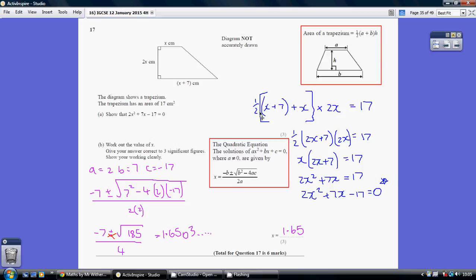We've basically constructed our own equation, which we need to solve. Start off by adding up inside the square brackets. x plus 7 plus x is 2x plus 7. So we've now got three terms being multiplied together.